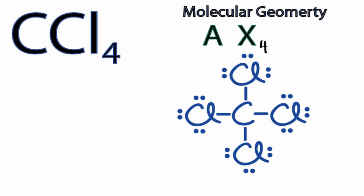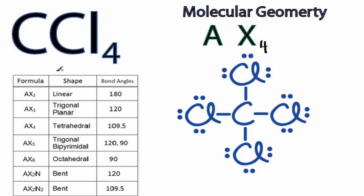Now, you could have memorized that that's tetrahedral, or you can look it up on a table if you have one available. Going down our table here, we have AX2, AX3, and there's AX4, which is tetrahedral, and the bond angles are 109.5 degrees.